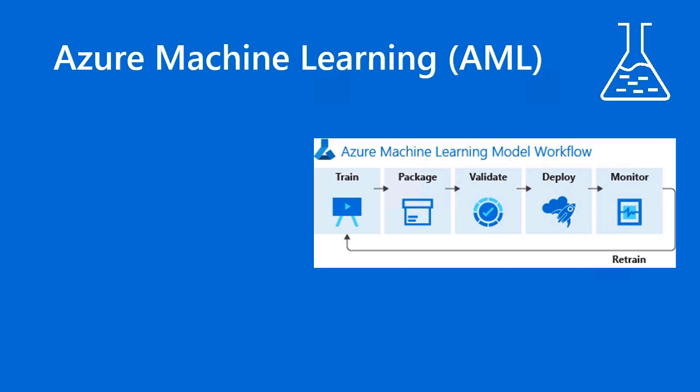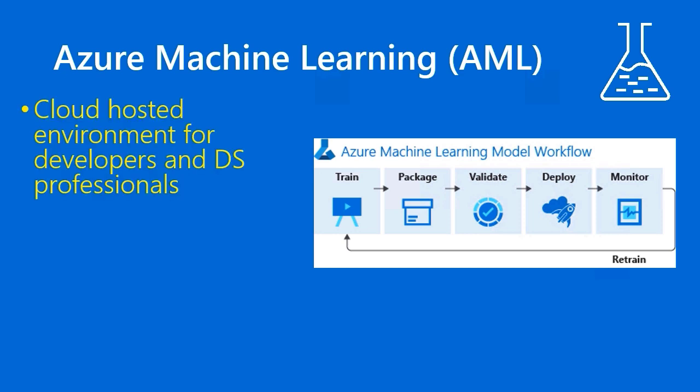In Azure, we have the Azure Machine Learning, or AML, product. Like many things in Azure, the product has undergone a little bit of rebranding. There was an original Azure Machine Learning Studio product that was good but a little too proprietary. So now we have Azure Machine Learning, or AML, which is a cloud-hosted environment for both developers and data science professionals. There's even a graphical ML training wizard where you can drag and drop different elements — it's very slick.